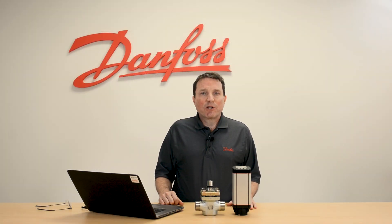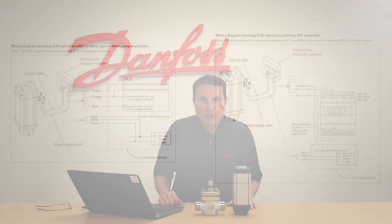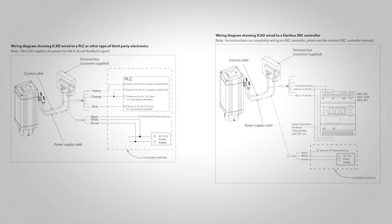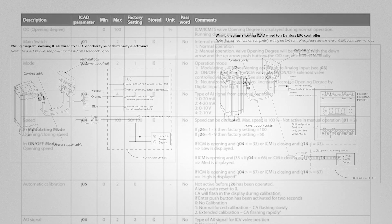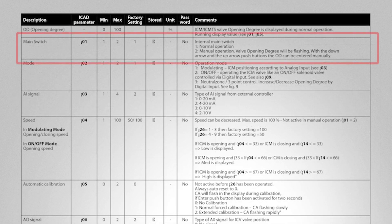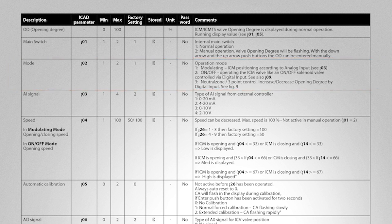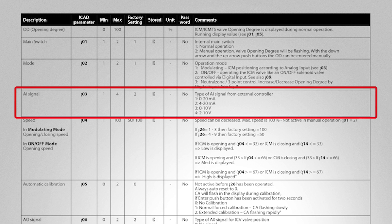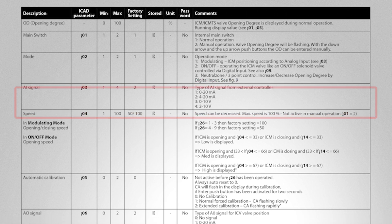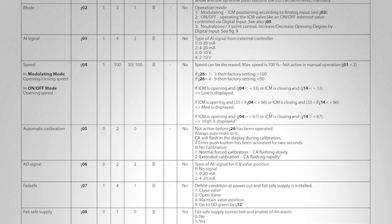First we're going to go over our most common application for the iCAD actuator, which is using a 4 to 20 milliamp signal with a modulating valve. Here you see the wiring diagrams for a PLC and for a Danfoss controller. The main switch IO1 would be set to 1 for normal operation. The mode IO2 would be set to 1 for modulating. The analog input signal IO3 would be set to 2 for a 4 to 20 milliamp signal, but as you can see on the screen we have other options for the input signal as well.